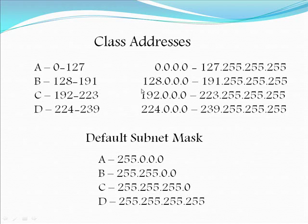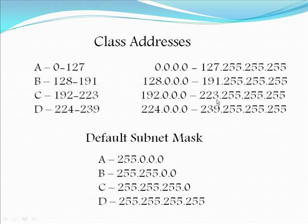Class B addresses range from 128 through 191, encompassing 128.0.0.0 through 191.255.255.255. Most people are used to starting at 0, and 255 is pretty much the max you can get with eight bits in binary — I'll explain that in just a minute. Class C addresses range from 192 to 223, encompassing 192.0.0.0 to 223.255.255.255.